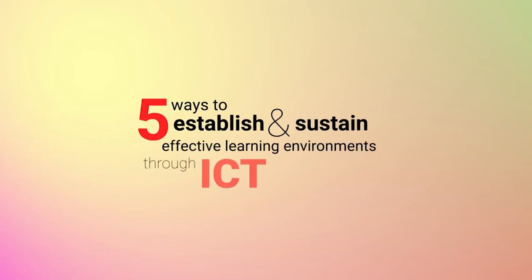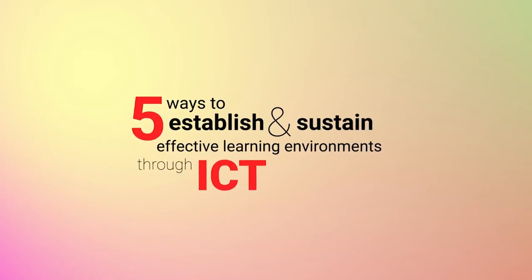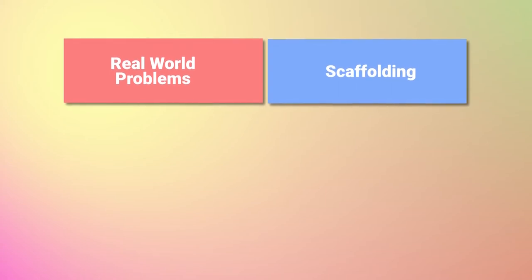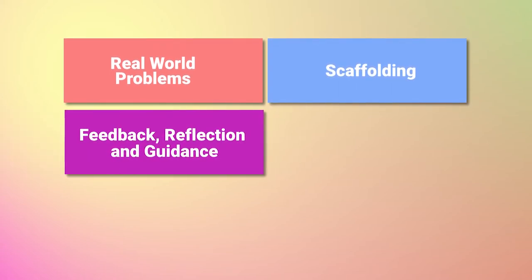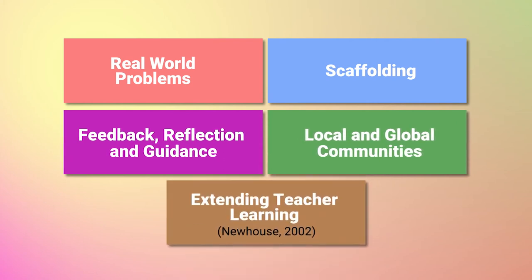The five ways to establish and sustain effective learning environments through ICT, as suggested by the Committee on Developments in the Science of Learning 2000, are: addressing real-world problems, scaffolding, providing feedback, reflection and guidance, involving local and global communities, and extending teacher learning, as viewed by Newhouse 2002.